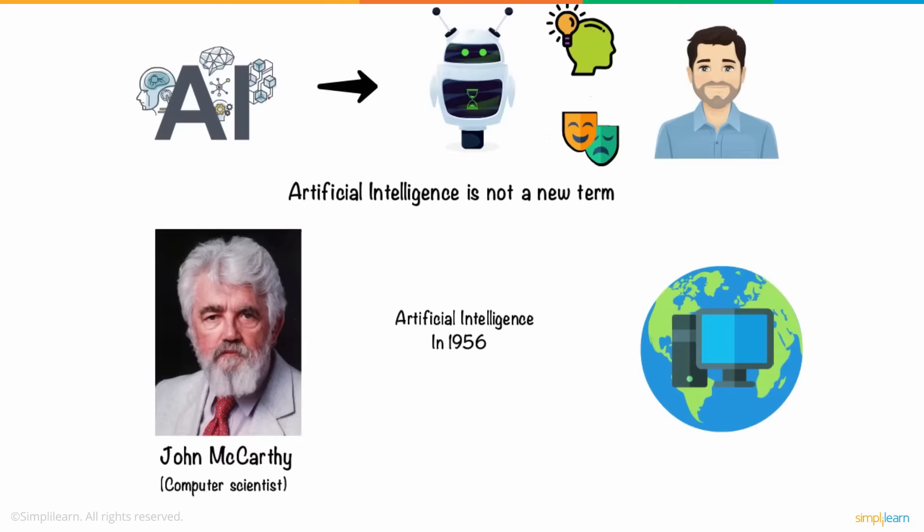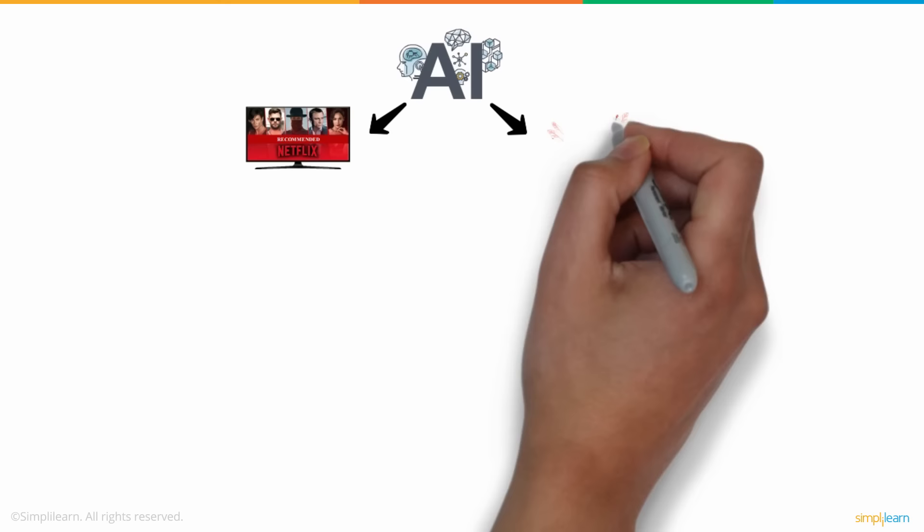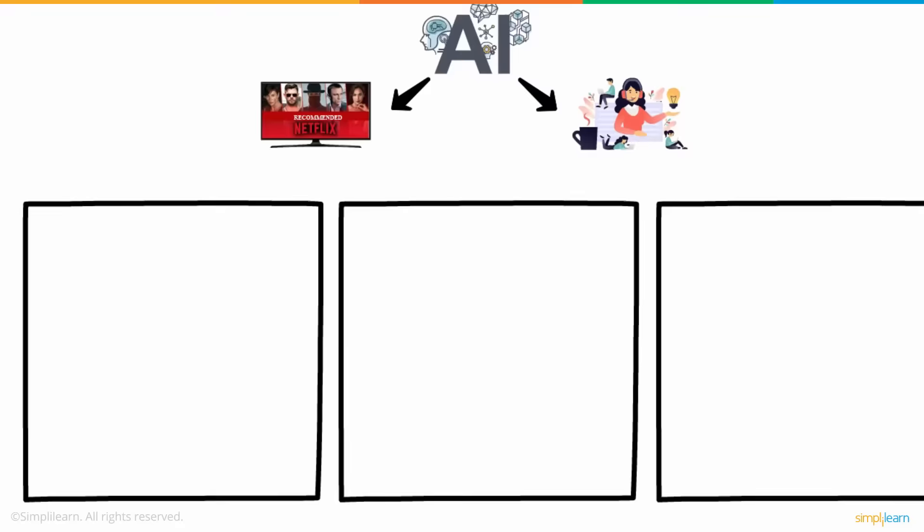Artificial intelligence is not confined to just movie recommendations and virtual assistants. Broadly classifying, there are three types of AI. Artificial narrow intelligence, also called weak AI, is the stage where machines can perform a specific task.